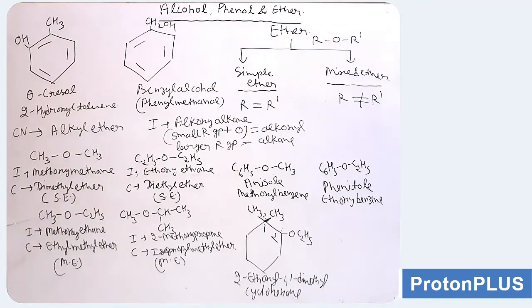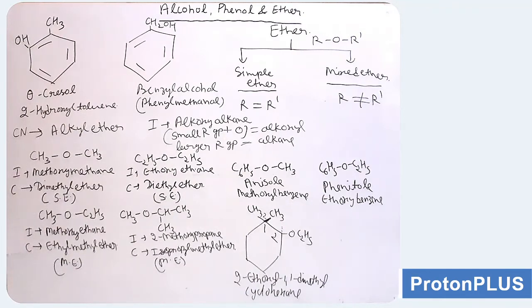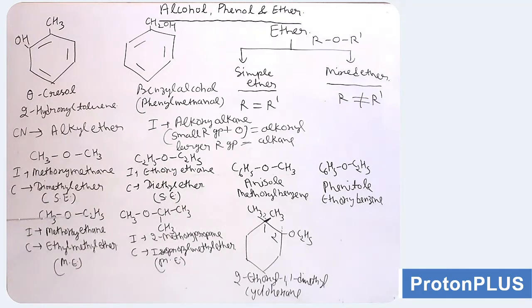Next, CH3OCH2CH3: mixed ether, as both R groups are not similar. IUPAC: small R group (methyl) plus oxygen gives methoxy, and the parent chain is ethane (two carbons): methoxyethane. Common name: alphabetical order — E before M, so it is ethyl methyl ether. Similarly, CH3OCH(CH3)2: methyl and isopropyl groups — mixed ether. IUPAC: the longest chain is 3 carbons; position of the alkoxy group (OCH3) is at position 2: 2-methoxypropane. Common name: isopropyl methyl ether.